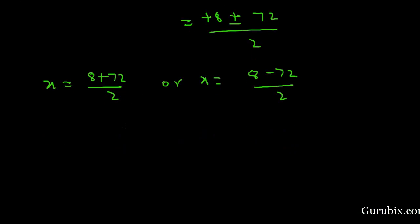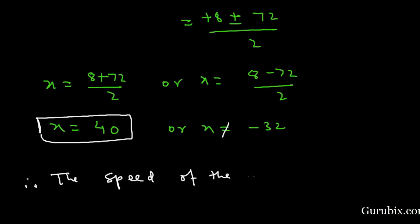Once we take positive sign, and secondly we take negative sign. Here is x equals 40, and here is x equals minus 32. Since the speed cannot be negative, then this value is not appropriate here. So x does not belong to minus 32. Therefore, the value of x is 40. Therefore, the speed of the train is 40 kilometers per hour.